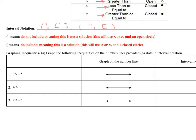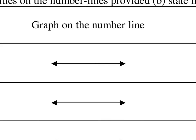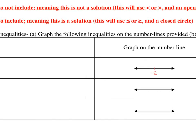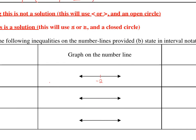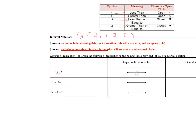For our first example, we have c is greater than negative 2. We first want to graph this on the number line. When we have c greater than negative 2, we simply put negative 2 on our number line — we don't need to put multiple numbers. We want numbers that are larger than negative 2. One student told me: if you're writing it as c greater than negative 2, you want to shade in this direction. So we're going to shade to the right, and since it's greater than, we're going to put an open circle around our negative 2.